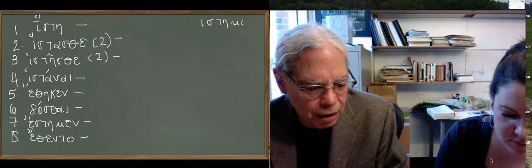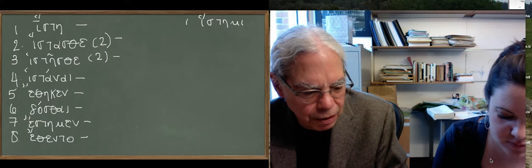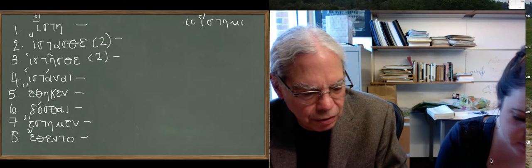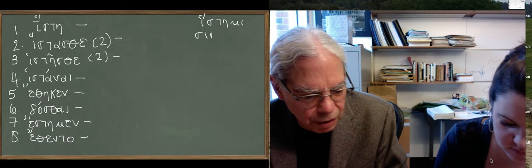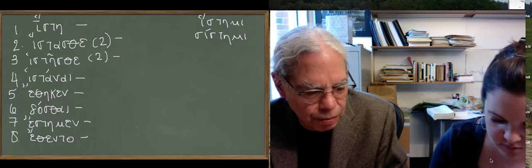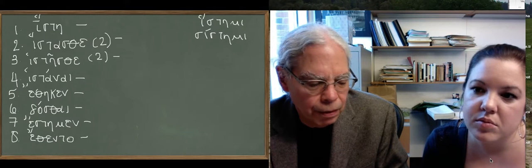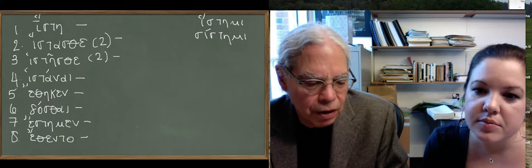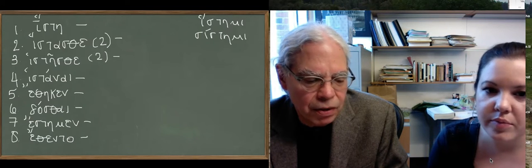Histemir actually comes from sistemir. So you want to write that down? The initial s, it was sisteme, where you have reduplication with an i, but in ancient Greek, when a word began with an initial s followed by a vowel, the s turned into an h, so that's why you have histeme.